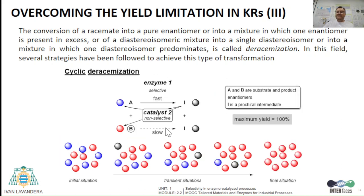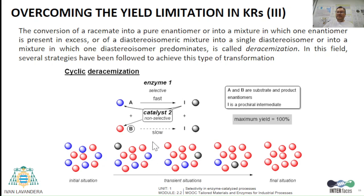A third type of deracimization can occur if a first selective enzymatic transformation modifies just enantiomer A into intermediate I, and a second non-selective reaction is coupled giving back both substrate enantiomers at similar rates. If this system works over enough cycles, substrate enantiomer A will slowly be transformed into enantiomer B. This particular system is called cyclic deracimization.